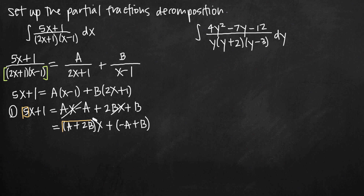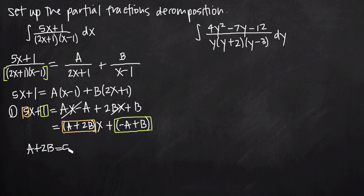Now that the right hand side is simplified, we compare coefficients on both sides. The coefficient on the first degree x term on the left is 5; on the right it's a plus 2b, so 5 must equal a plus 2b. The constant on the left is positive 1, which must equal negative a plus b on the right. This gives us a system of two simultaneous linear equations to solve for constants A and B.